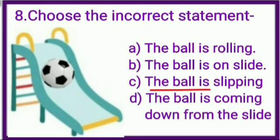Option C: The ball is slipping. See kids, this statement is not correct. Ball is round. It only roll and not slip. And option D: The ball is coming down from the slide. It is also a correct statement.